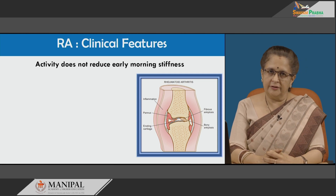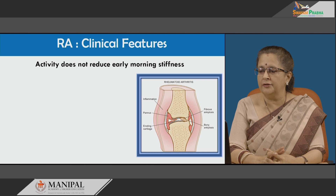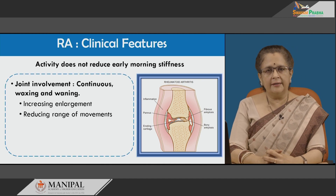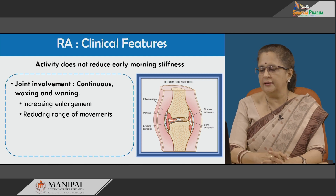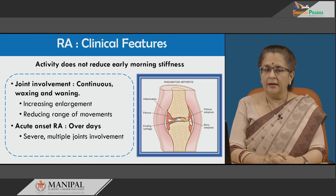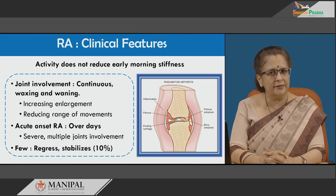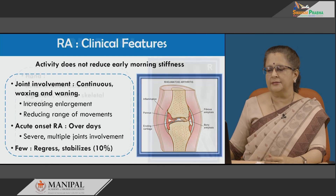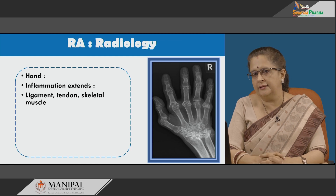Another important feature is early morning stiffness, which unlike other conditions such as osteoarthritis, does not reduce with activity in rheumatoid arthritis. Joint involvement is continuous with waxing and waning, with increasing enlargement and reducing range of movement as the disease progresses. Acute onset rheumatoid arthritis can occur over days, with multiple joints involved simultaneously. Only about 10 percent of cases regress or stabilize; most are progressive with waxing and waning.